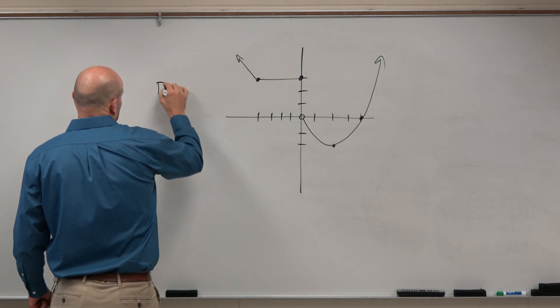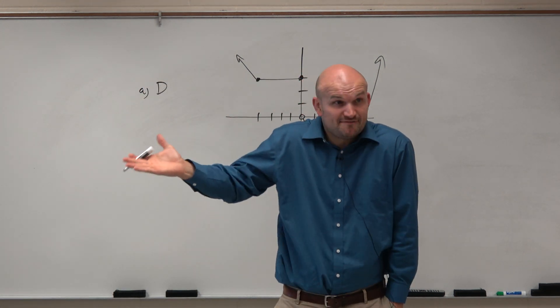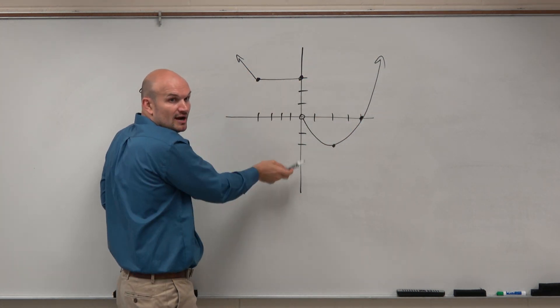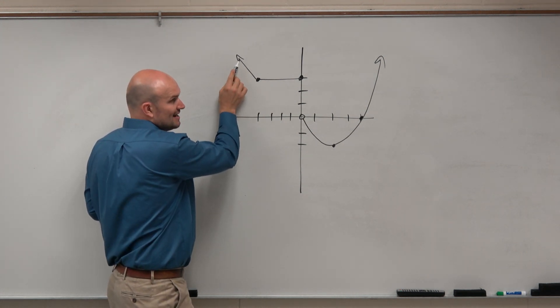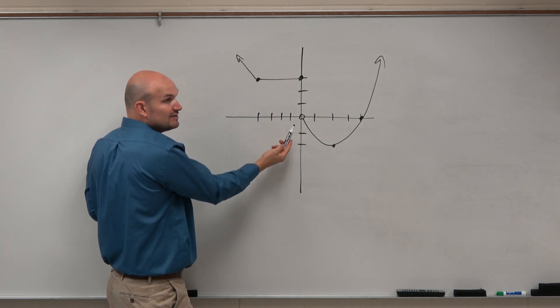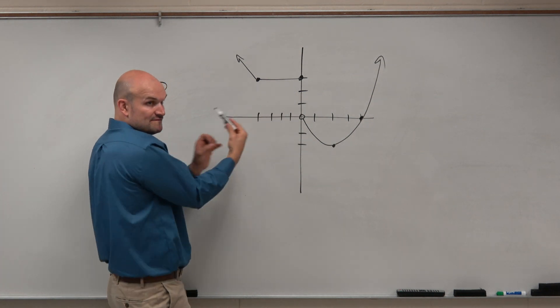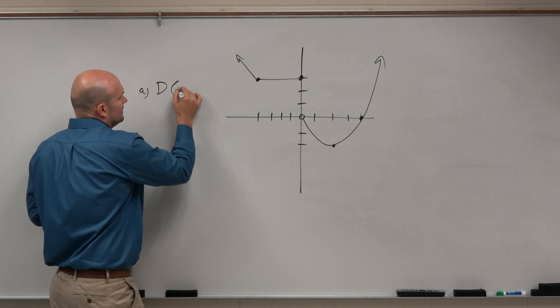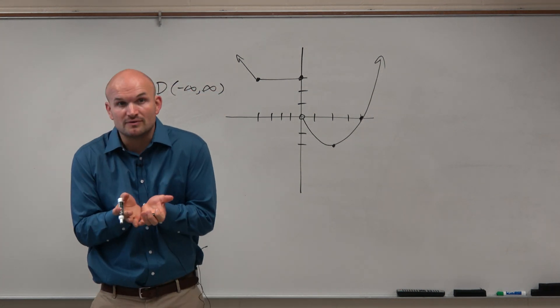So the first one is the domain. Remember, the domain is the set of all x values, how far left the graph is going to how far to the right. Now this one's interesting because you can see there's a break, right? But again, we're only thinking domain as x values. So we're defined here, defined here, defined here. At x equals 0, where this break is, do we have a defined point? Yes. So it's undefined here but it's defined there, which fills in the gap of the domain. And then it just continues all the way going to the right. So my domain is going to be from negative infinity to infinity. I actually have all real numbers for the domain.